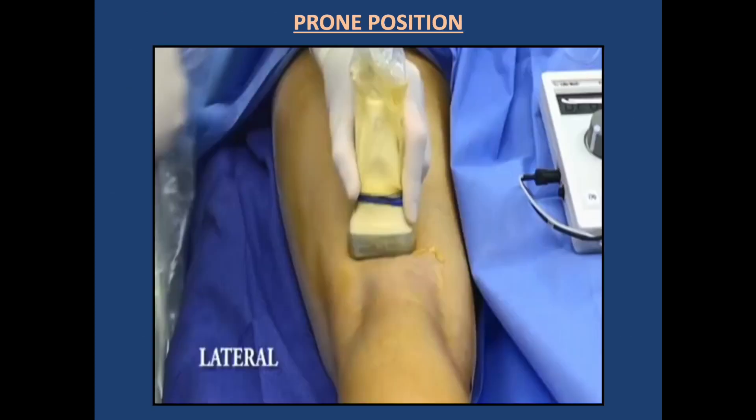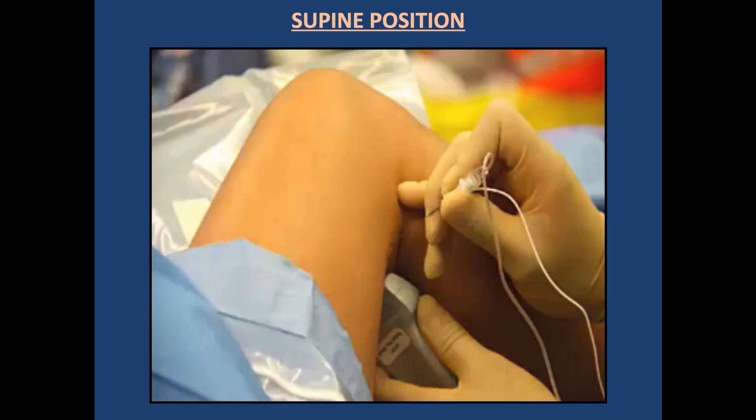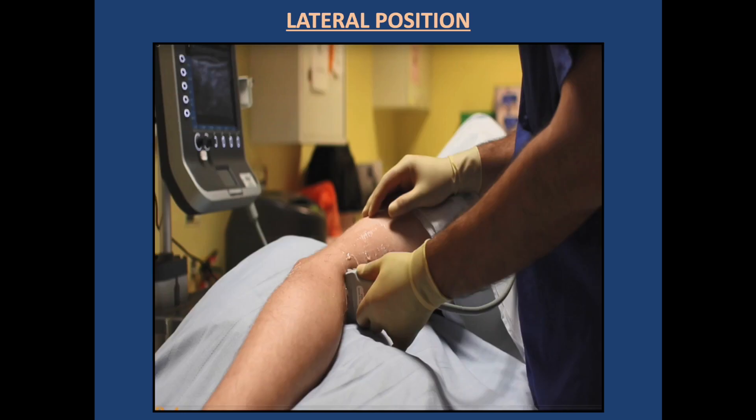This diagram shows the prone position, in which the probe hand and needle hand are very easily stabilized. This is followed by a diagram showing the supine position and a diagram showing the lateral position.